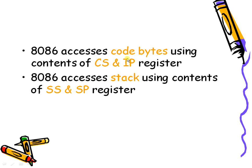8086 accesses code bytes using the contents of the CS and IP registers. If CS and IP registers are added, we get the physical address where the instructions are present. 8086 accesses the stack using the contents of SS and SP — adding SS and SP gives the physical address inside the stack segment.